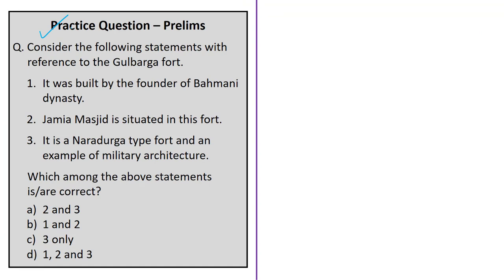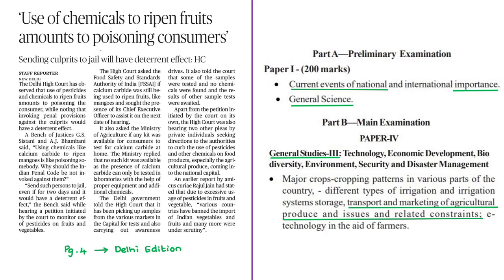This news article is about the usage of pesticides and chemicals for ripening fruits. The Delhi High Court has given its observations based on a petition initiated by the court on its own, as well as while hearing two other pleas by private individuals. The pleas sought directions from authorities to curb the use of pesticides and other chemicals on food products, especially agricultural produce coming into Delhi. The judges specifically spoke about calcium carbide, a chemical used in artificial ripening of fruits. The relevant syllabus for this discussion is given here for your reference.